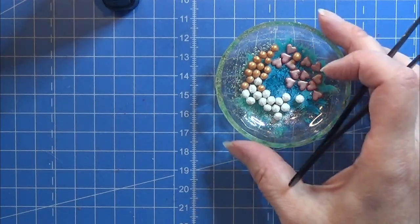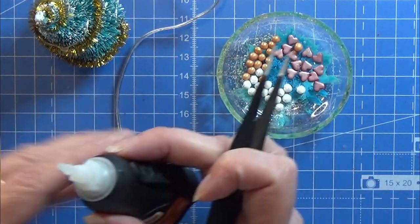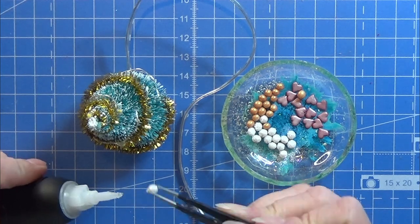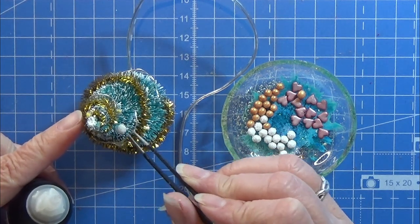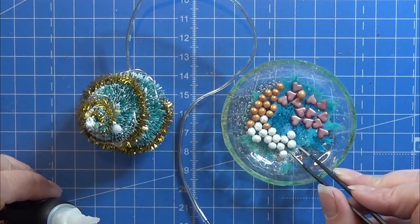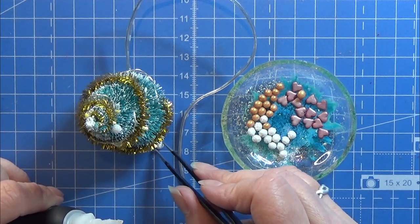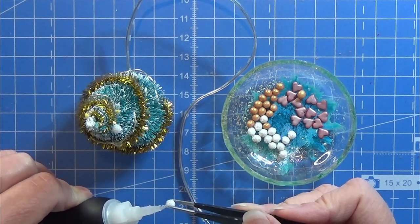I am going to glue some of these decorations on my tree, so again I'm just using my super glue gel and just placing these pieces where I want them here and there on the tree. And that's all there is to this.